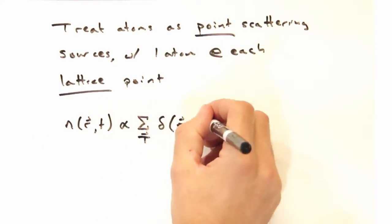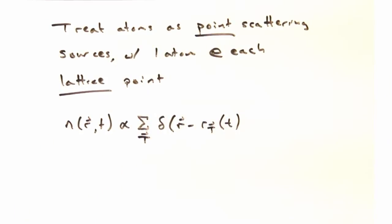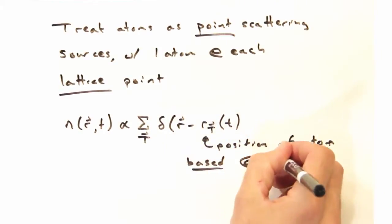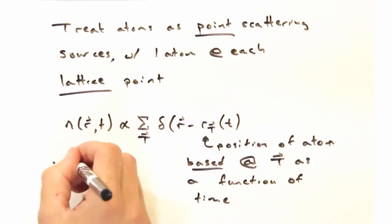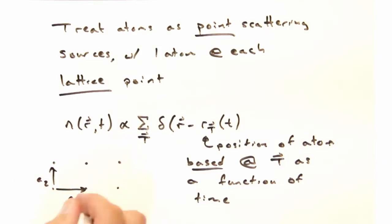When we do this, we can say that our scattering density n is simply the sum across the set of delta functions positioned at r minus some r_t. And this second term here is going to be the position of the atom that's based at the lattice point t, but that position of the atom is going to vary a bit as a function of time.